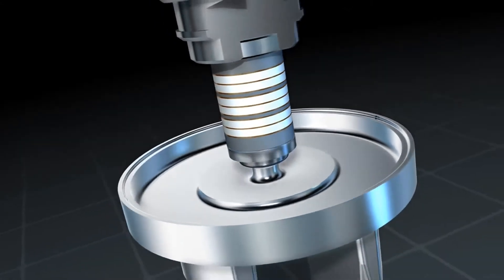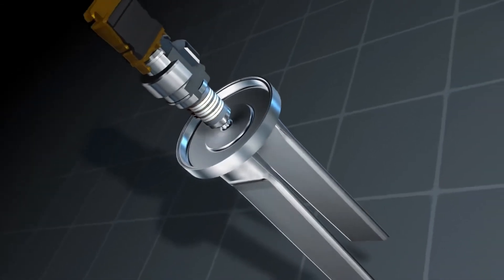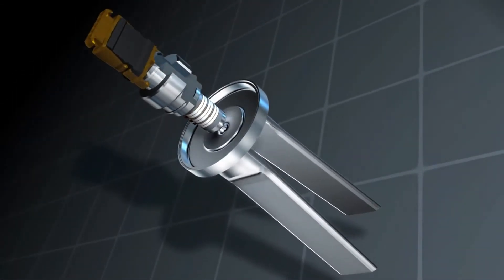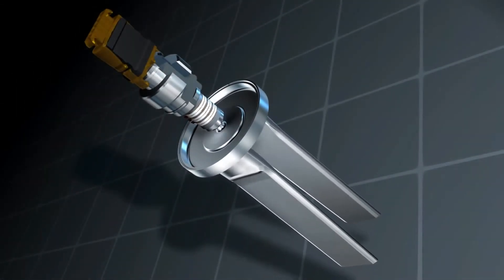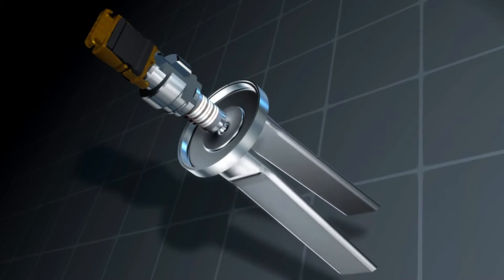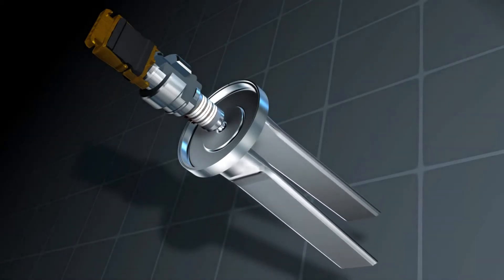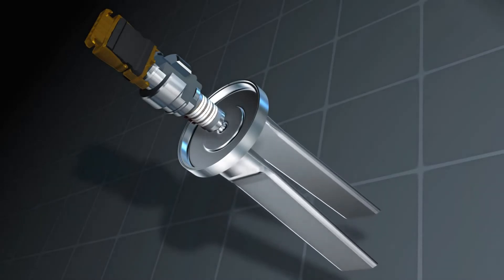The ends of the tuning fork, which is attached to the membrane, are pushed apart. As the piezo contracts again, the membrane is bent to the inside. The ends of the tuning forks, attached to it, are pulled together.